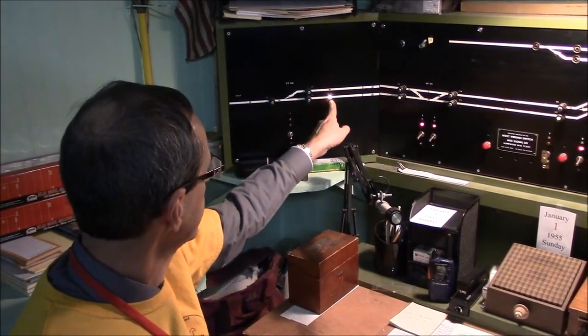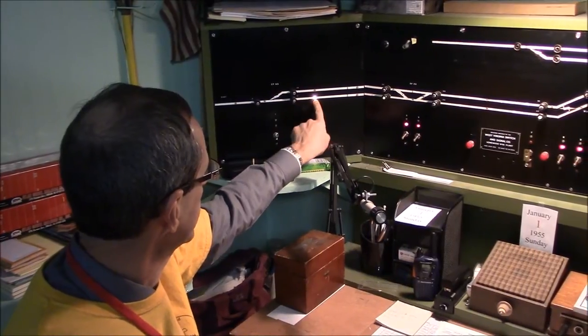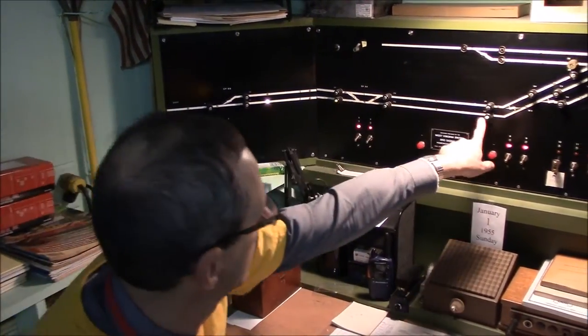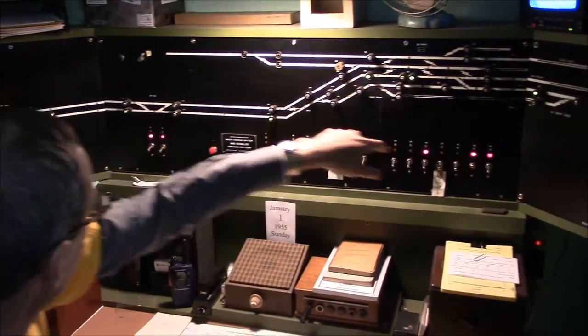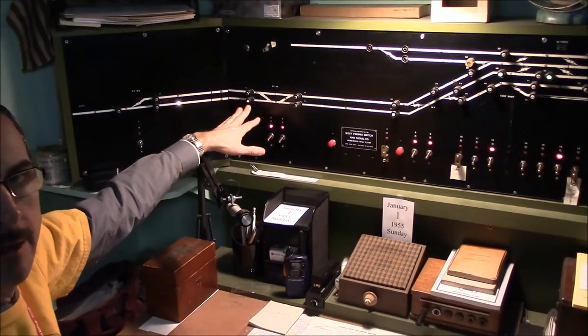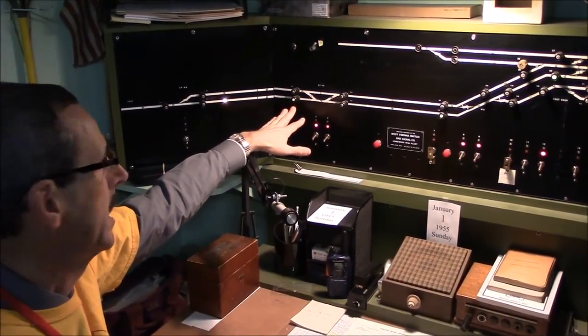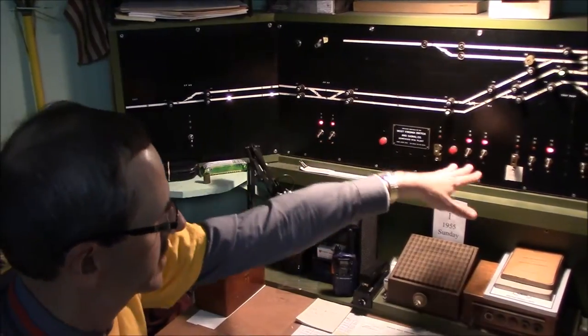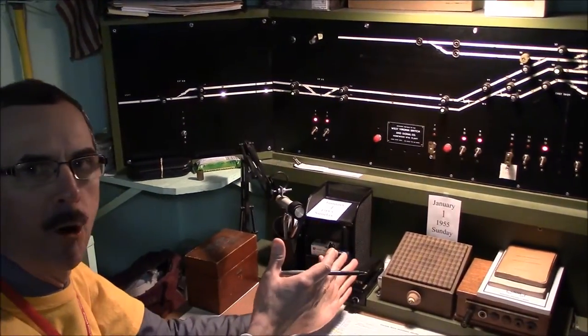You see we have a train that's going through here. That shows occupancy on this track. I have it lined up all the way through the interlocking plant. As he advances through, his signals will go back to stop to protect him from any following moves, and also will eventually release the switch locks. It's basically an analog computer.